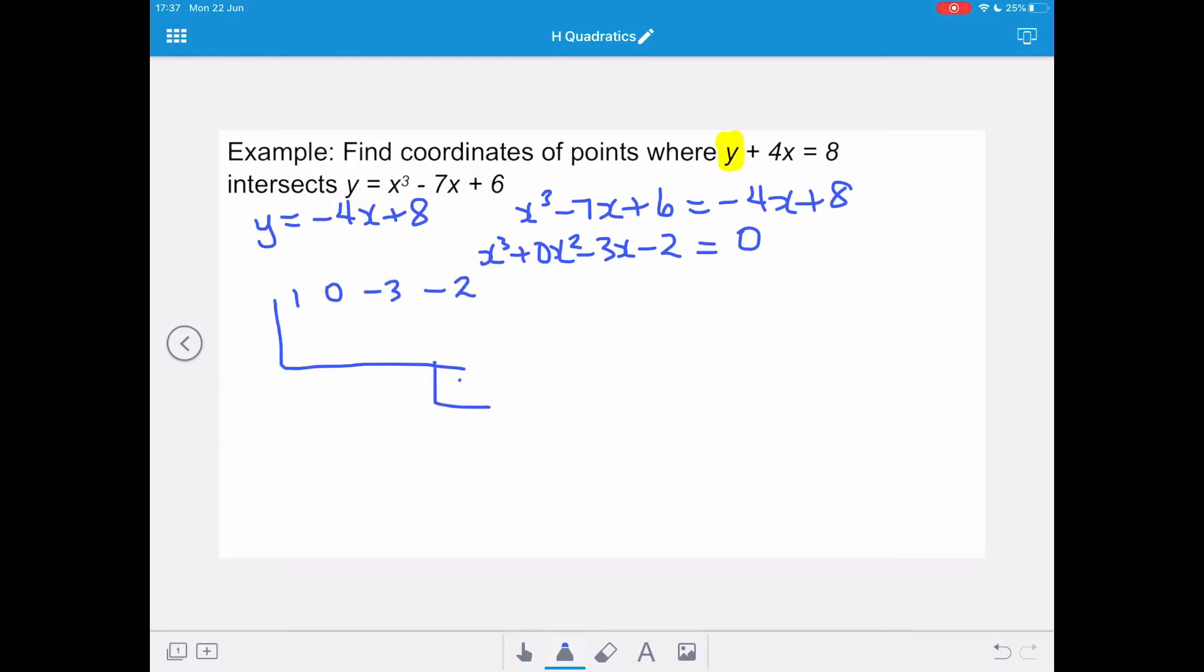And we want a remainder of 0. So we're going to try negative 1. We're bringing down the 1. If we multiply that through, we do indeed end up with negative 2 times negative 1 is 2, giving us our remainder of 0. And that means x plus 1 is a factor.